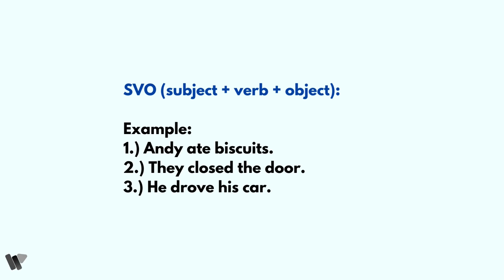In the second example, 'they' is a pronoun taking the place of a noun, so 'they' is the subject. 'Closed' is the verb or action word, and 'the door' is the object. In the third example, 'he' is the subject, 'drove' is the verb, and 'car' is the object. Now let's go to the next structure in English.